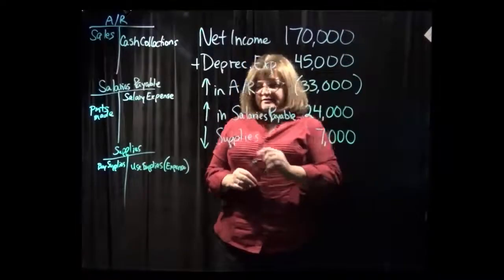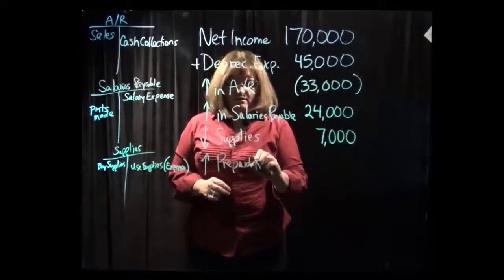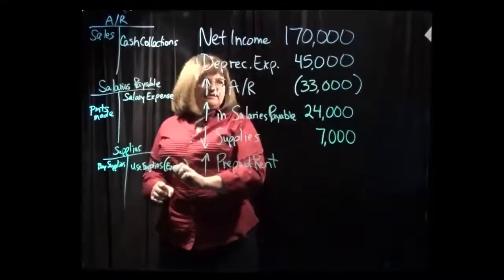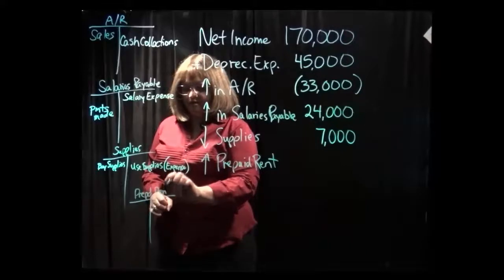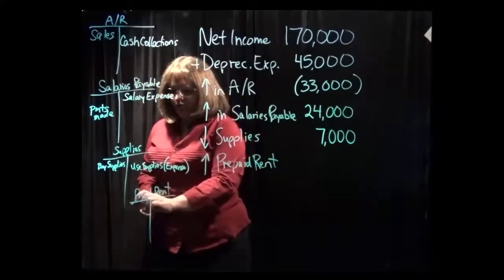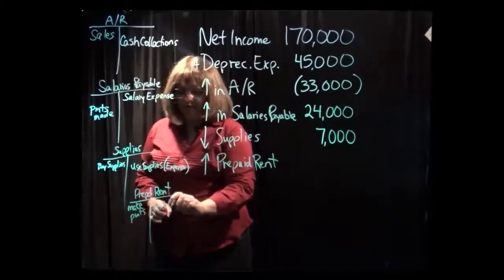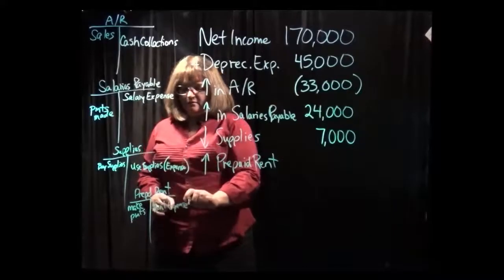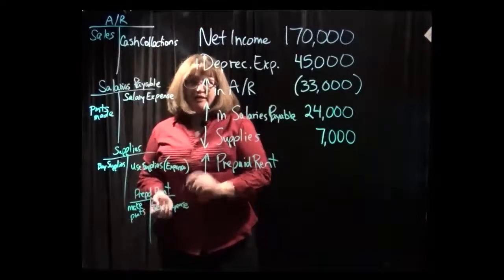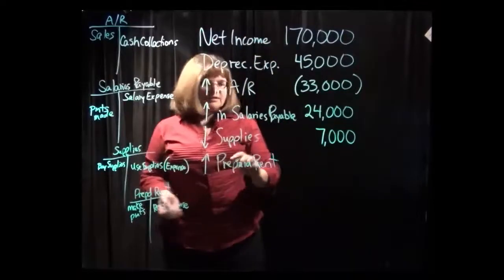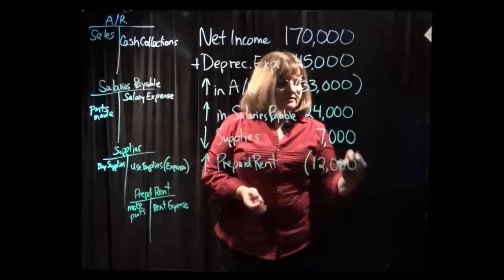Next we look at the prepaid rent account, and it says that the prepaid rent account increased during the time period. Prepaid rent is an asset account — it increases when we make payments for rent, and it decreases when we record the rent expense. If the prepaid rent went up, that means we made more payments for rent than what we recorded as rent expense in calculating this net income number. That means prepaid rent increasing was an additional use of cash, so we have to subtract that increase of $12,000.